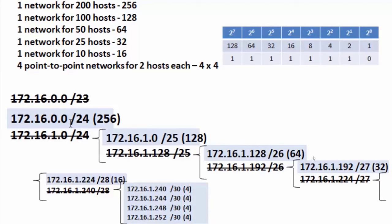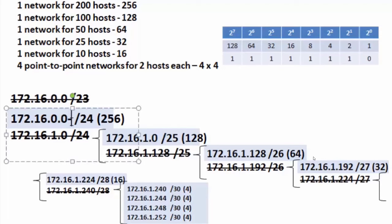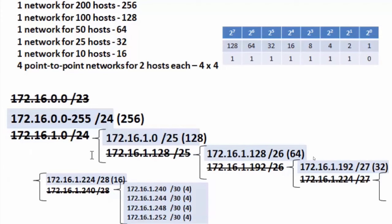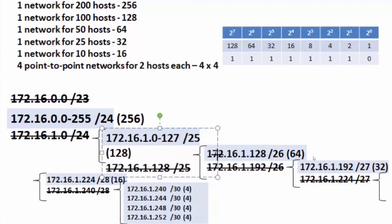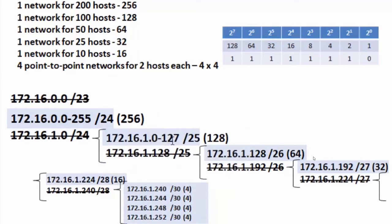Examining the host addresses closely, none of the subnets overlap. The 172.16.0.0/24 subnet goes from 0 to 255, and the next subnet starts at 172.16.1.0 — no overlap. The second subnet goes from 0 to 127, and the next subnet at 172.16.1.128/26 begins at 128 — again, no overlap. This pattern continues through all subnets.